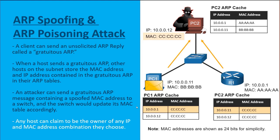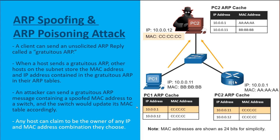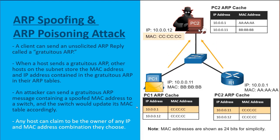PC1 will want to send data to 10.0.0.1, and to do so it'll send it to the MAC address of all-C's, which is PC2. PC2 forwards that data onto the router. The router will send it outbound to where it needs to go. As the router responds back to the 10.0.0.11 IP address, it'll be responding back targeting all-C's — the MAC address of the threat actor. This is a beautiful man-in-the-middle attack.